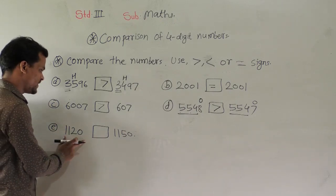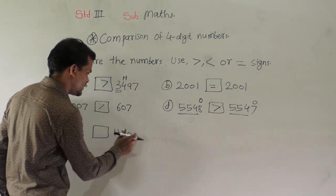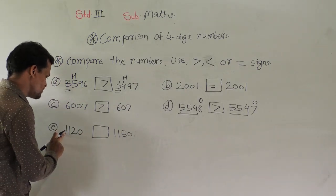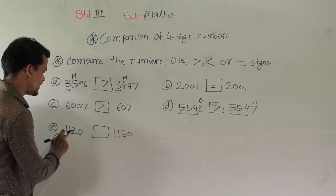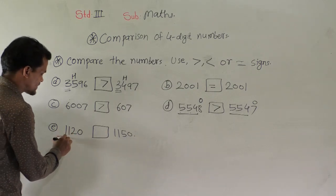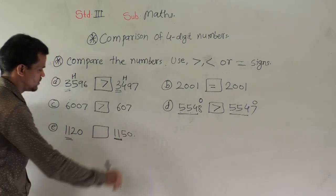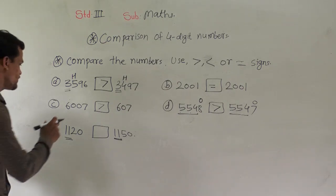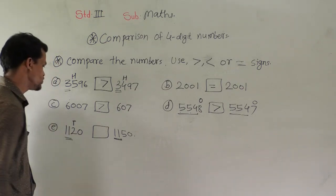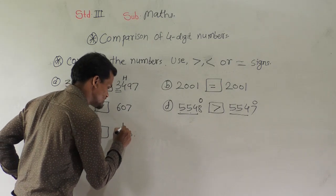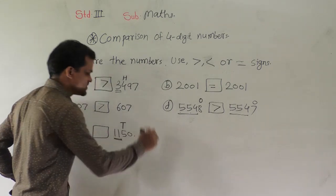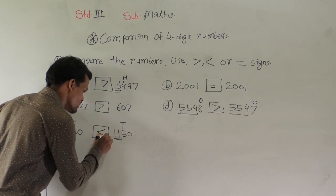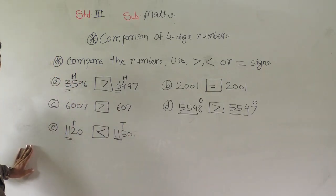Then next: 1120 and 1150. You can observe here the thousands digit and hundreds digit are the same in both numbers. So compare the tens digit. Here at tens place 2 is there, and here at tens place 5 is there. So 5 is greater than 2, so we will use this sign.